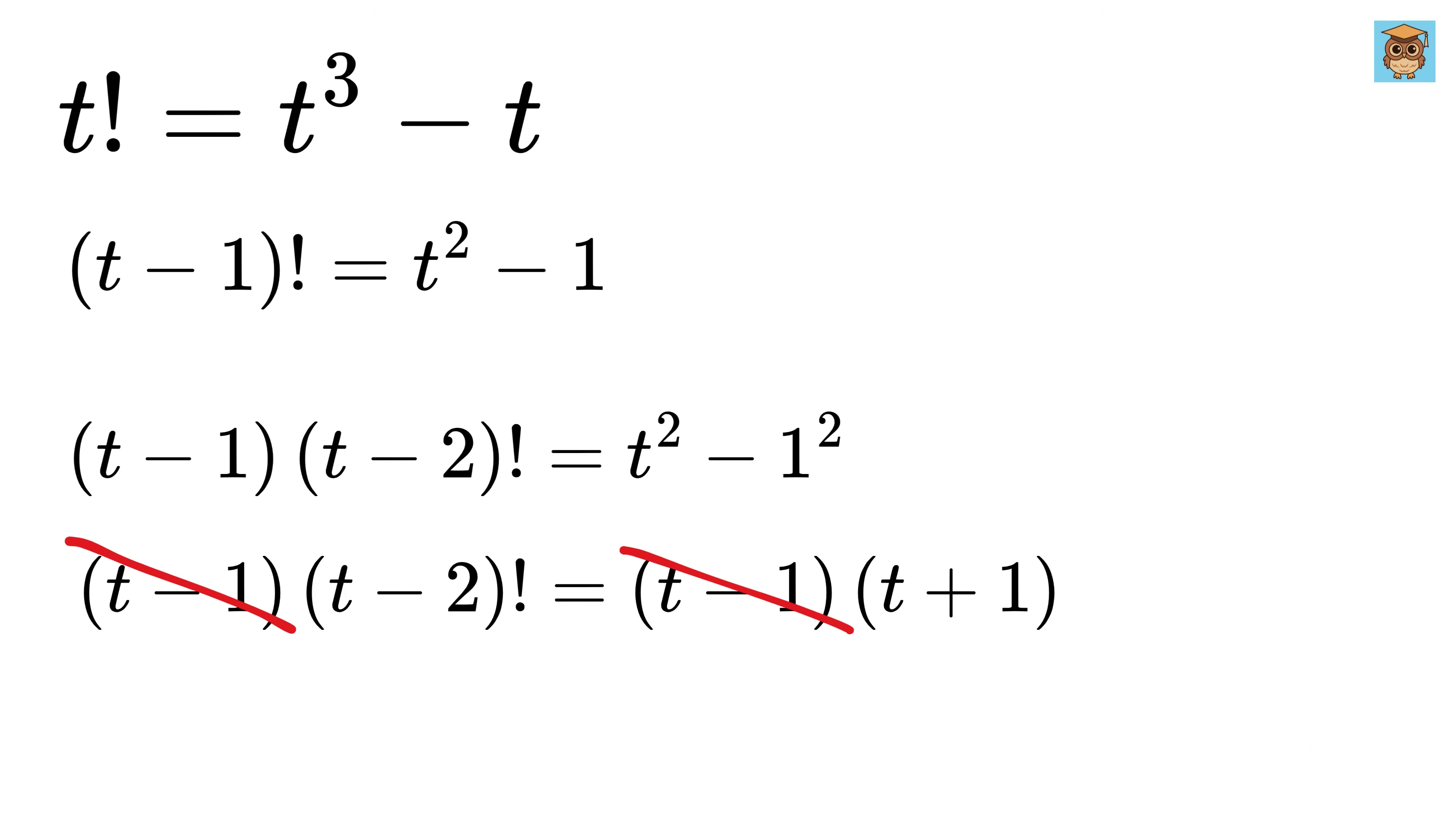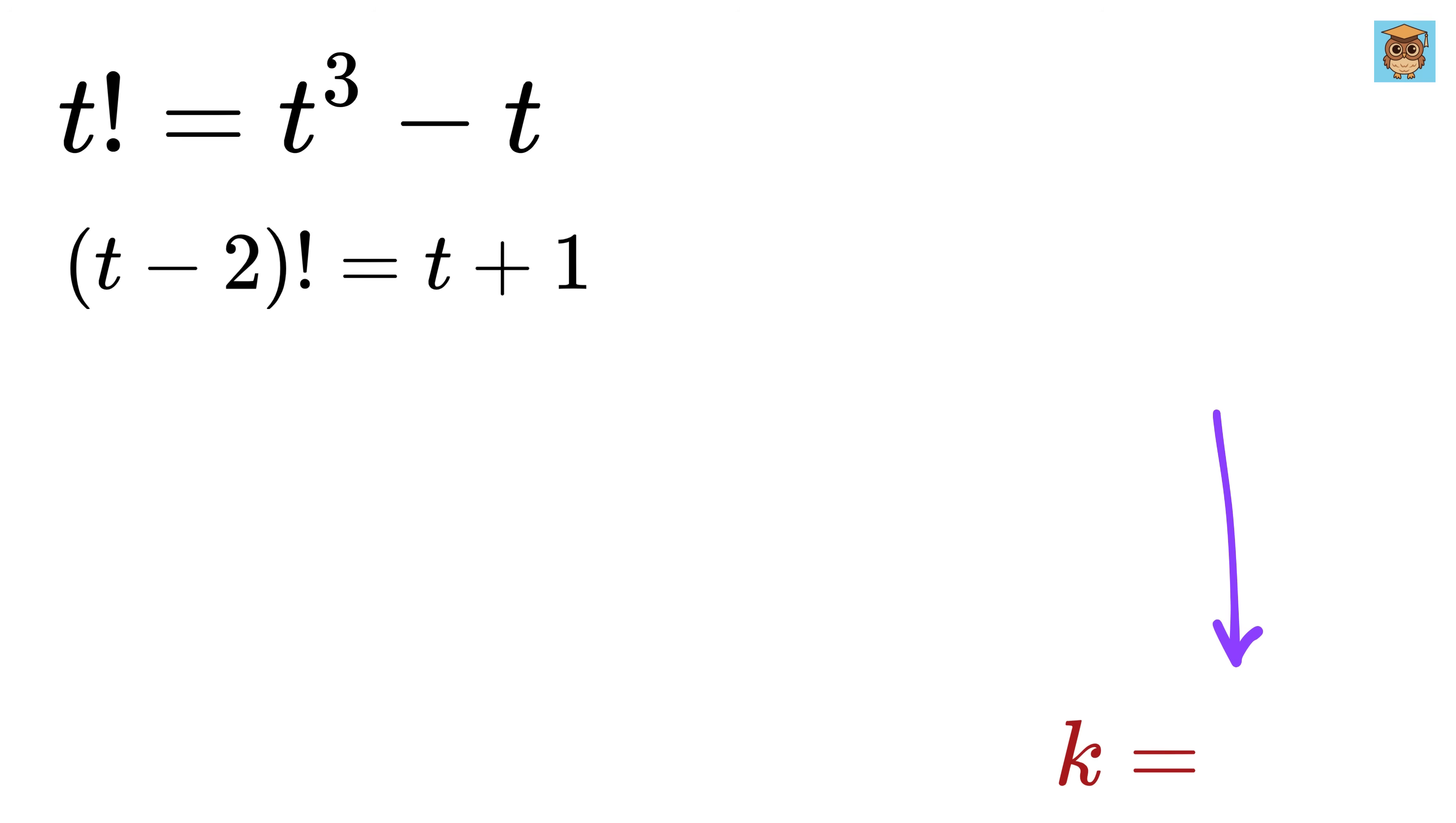Oh, look, t minus 1 will also get cancelled out from both sides, and we will be left with t minus 2 factorial equals t plus 1. Now, let us substitute a variable k as t minus 2. So take 2 to this side to get t equals k plus 2, and hence t plus 1 equals k plus 2 plus 1, or k plus 3.